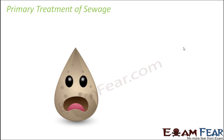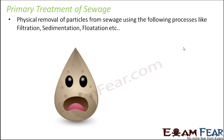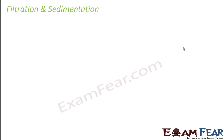This is going to be followed by the primary treatment of sewage. In primary treatment, we have physical removal of particles from the sewage using various different processes like filtration, sedimentation, flotation, etc. We will see how further because now we do not have bigger particles in the sewage and we also do not have a lot of sand or grit. However, we still have a lot of solid particles which are maybe even smaller in size, so now our targeting is those particles. Before we talk about the primary treatment, let us quickly look at the concept of filtration and sedimentation.